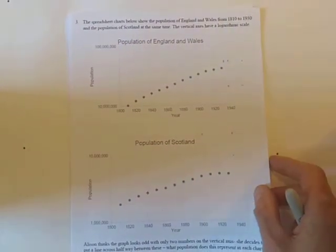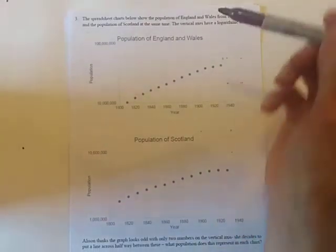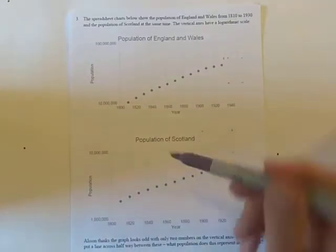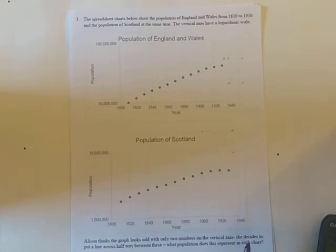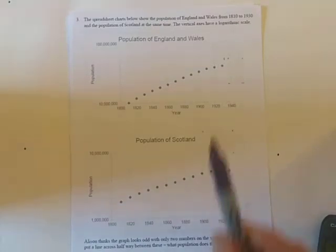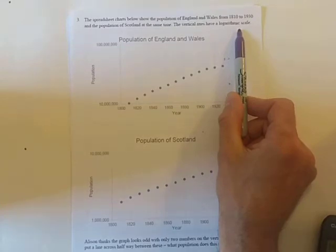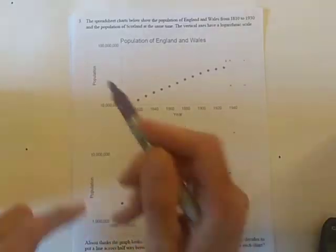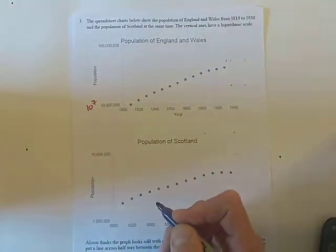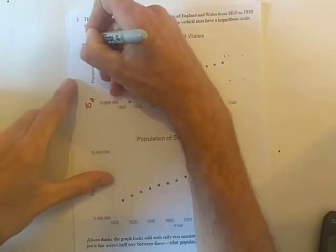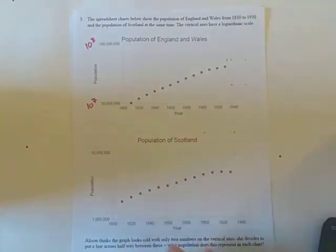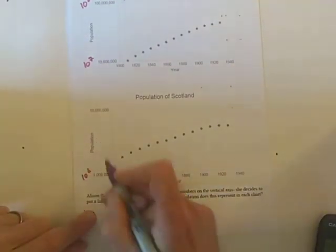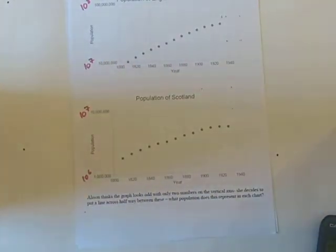For question three we're given two charts: one for the population of England and Wales, and one for the population of Scotland. Both go on a linear scale from 1800 up to 1940. Both have a logarithmic scale for population on the y-axis. For England and Wales this goes from 10 million (10 to the power of 7) up to 100 million (10 to the power of 8). For Scotland, with a smaller population, it goes from 1 million (10 to the power of 6) up to 10 million (10 to the power of 7).